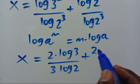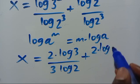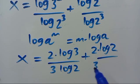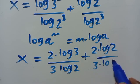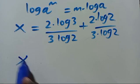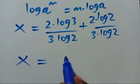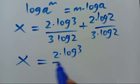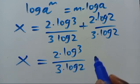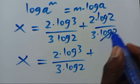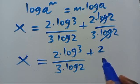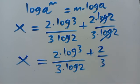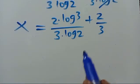From here we have 2·log 3 over 3·log 2 plus 2·log 2 over 3·log 2. In the second term, log 2 cancels with log 2, giving 2 over 3. So we have 2·log 3 over 3·log 2 plus 2/3.